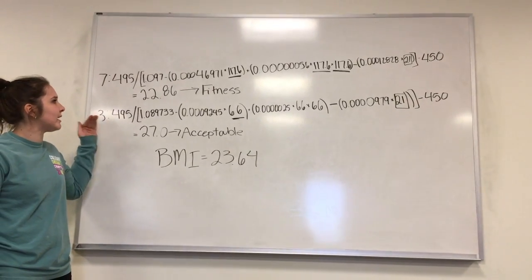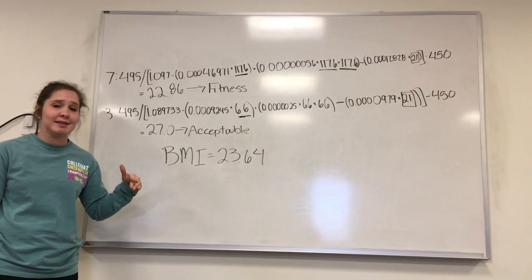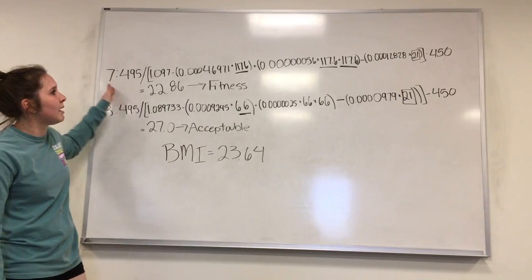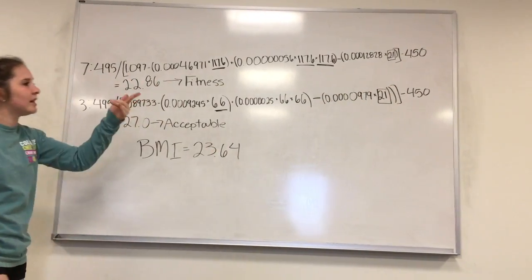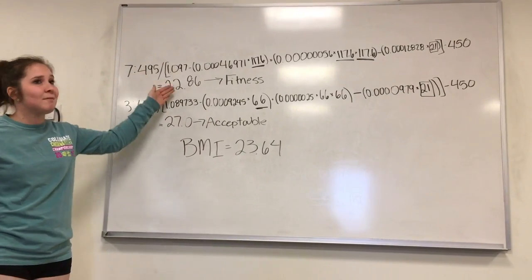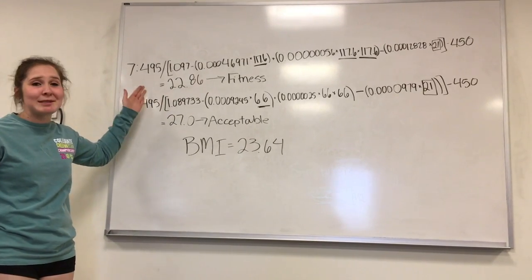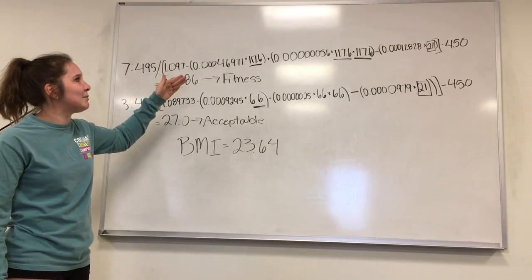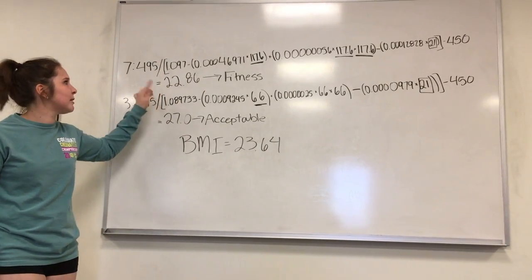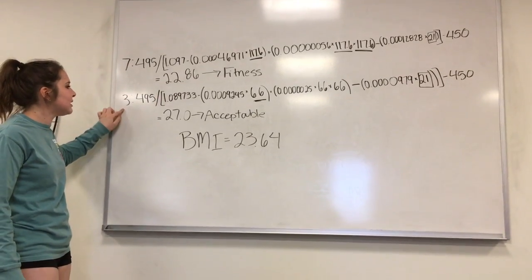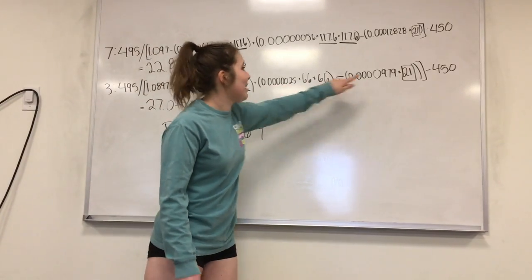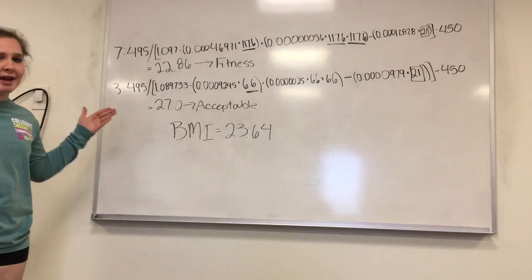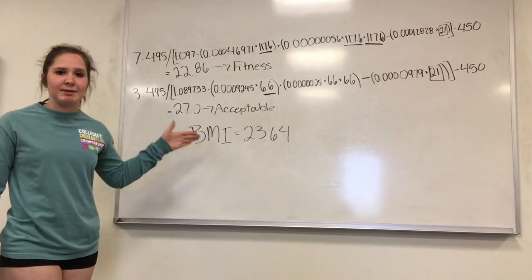Here are the calculations for body fat percentage. For the seven-site formula, you plug the seven-site sum of 117.6 into the designated spots and the participant's age — 21 — into the age variable. Make sure you have the correct number of zeros or you'll get the wrong answer. Plugging in 117.6 and age 21, we get 22.86%, which is a fitness level result. For the three-site formula, plugging in 66 and age 21 gives us 27.0%, which is an acceptable level.